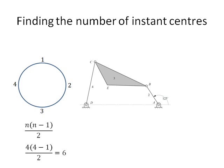Now it is time to calculate how many instant centers we need to find. Using the formula n multiplied by n minus 1 divided by 2, we find the number of instant centers to be 4 multiplied by 4 minus 1 divided by 2, which equals 6. There are 6 instant centers.